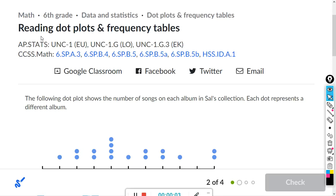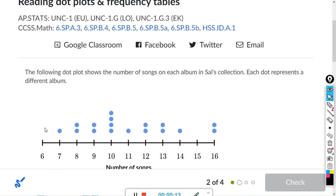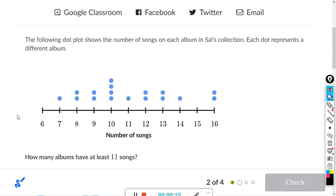Okay, this is for the Khan assignment reading dot plots and frequency tables. The following dot plot shows the number of songs on each album in Sal's collection. Each dot represents a different album. How many albums have at least 11 songs? When they say at least 11, that means 11 or more.